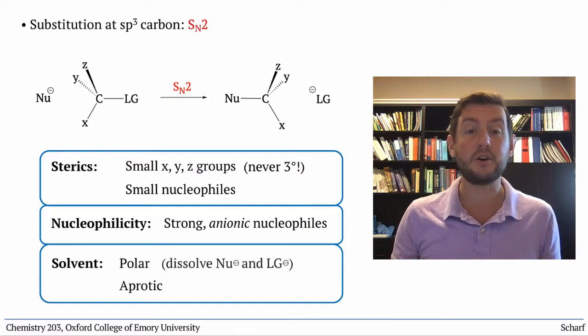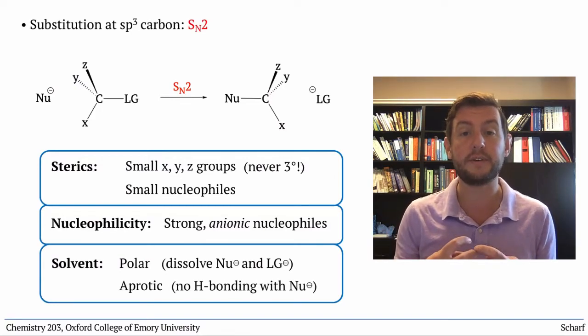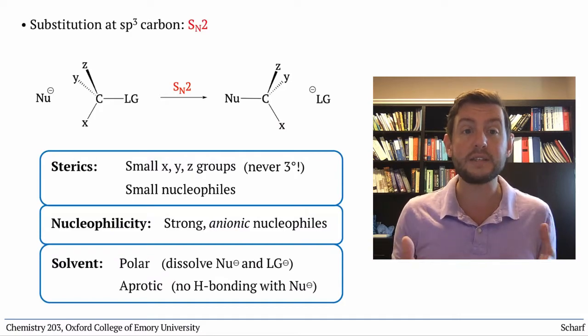Polar, so they can dissolve the ionic nucleophile and the leaving group, but aprotic, so they can't hydrogen bond with the nucleophile. That would lower its energy significantly.